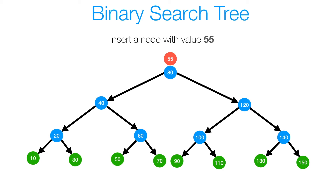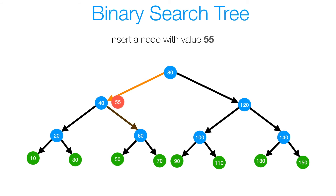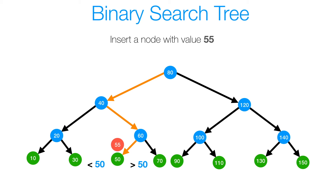Now let's look at inserting a value in a binary search tree. This method is going to be very similar to searching, because we have to search in order to insert. First we determine if 55 is less than 80 — it is — so it should be inserted in 80's left subtree. We go left. We check if 55 is less than 40 — it's not — so it has to be inserted in 40's right subtree. We go right. We check if 55 is less than 60 — it is — so it goes in 60's left subtree. We go left. We check if 55 is less than 50 — it's not — so it should be inserted in 50's right subtree. Since 50 is a leaf node, we insert our node with value 55 as 50's right child. And we're done.